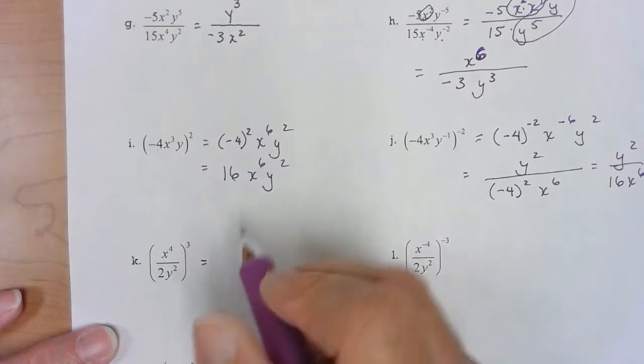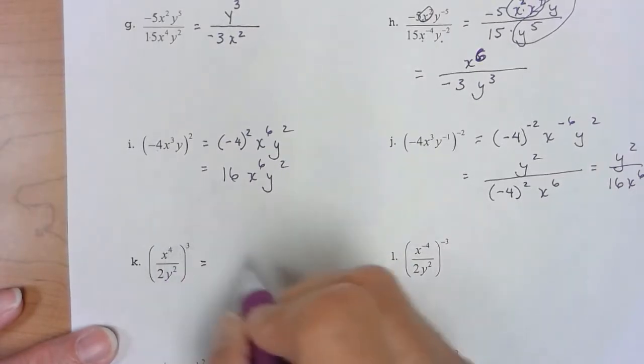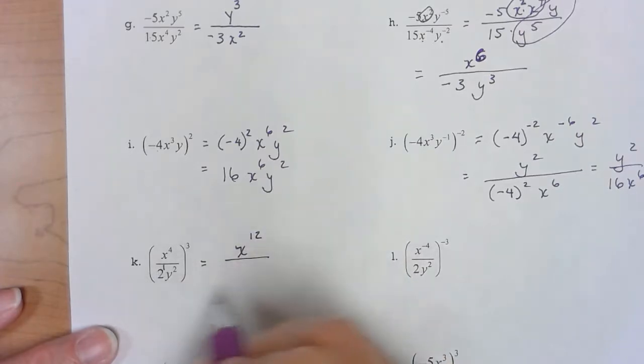No negative exponents. I'm going to go ahead and distribute by taking all of these and multiplying the exponents by that three. So x to the twelfth. If you're going to miss one it'll be that because you don't see it.